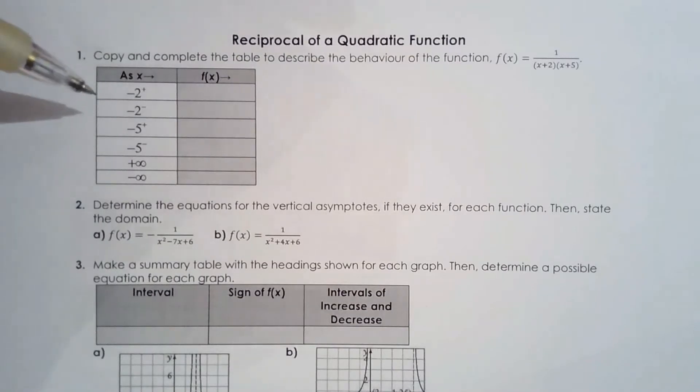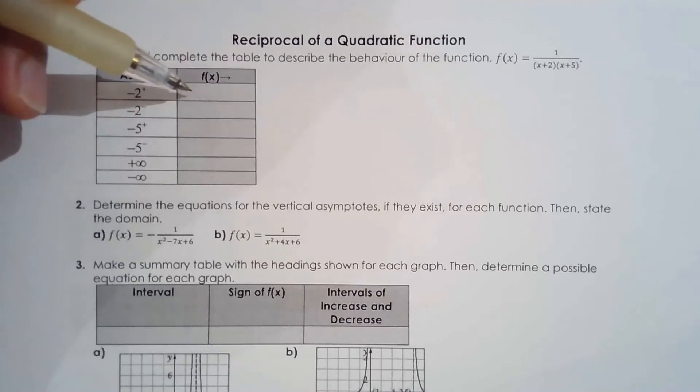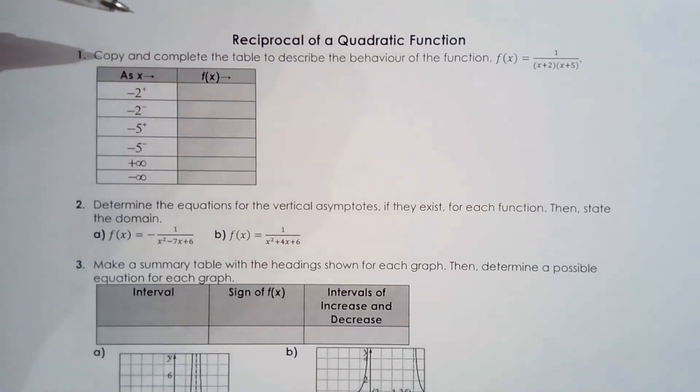So on the first lesson what I did was I approached negative two from the right side. So what I could do is build a table and show you negative 1.9, negative 1.99, negative 1.999 to show you what f of x is, the behavior of f of x, whether it's approaching positive infinity or negative infinity.